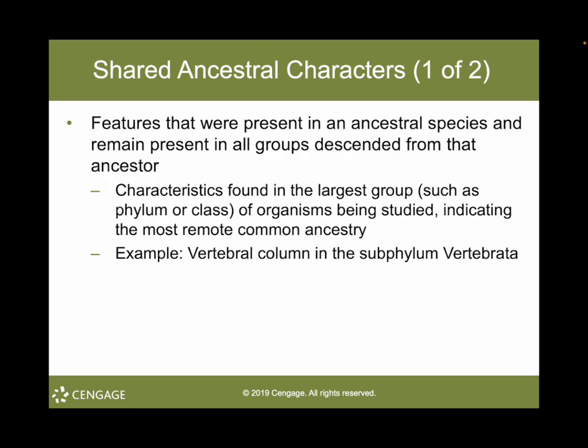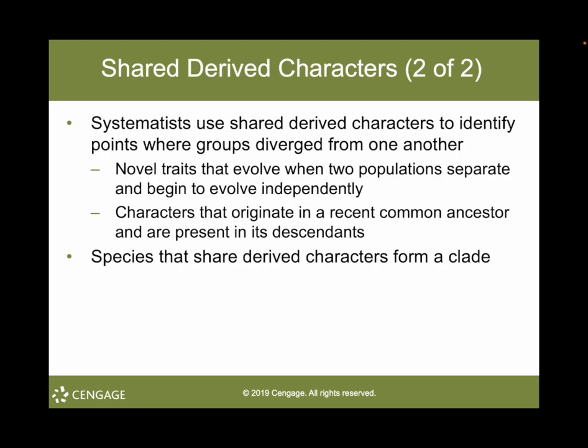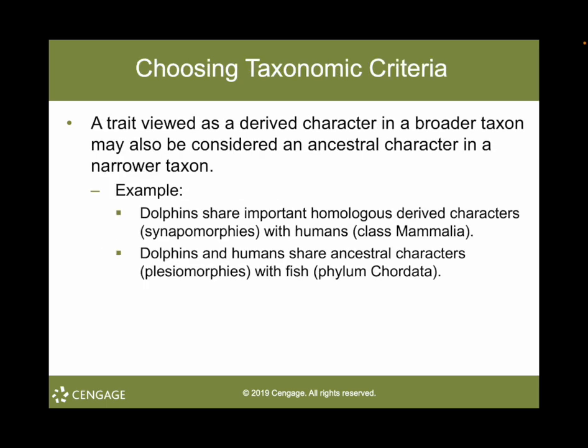Features that were present in an ancestral species and remain present in all groups descended from that ancestor are shared derived characters. Systematists use shared derived characters to identify points where groups diverge from one another — traits that evolve when two populations separate and begin to evolve independently. Species that share shared derived characters form a clade, which can also be referred to as a monophyletic group.